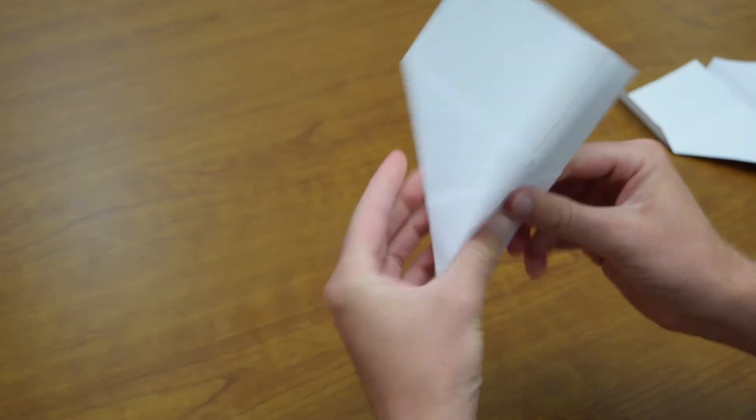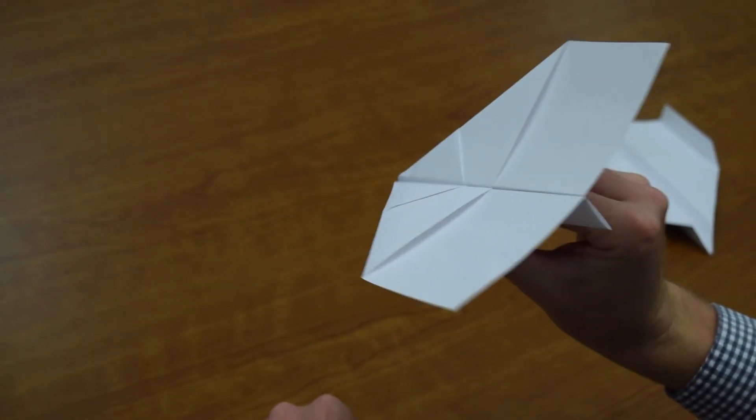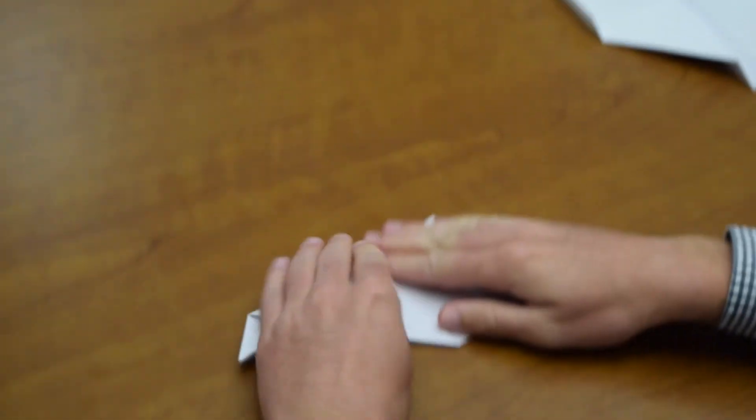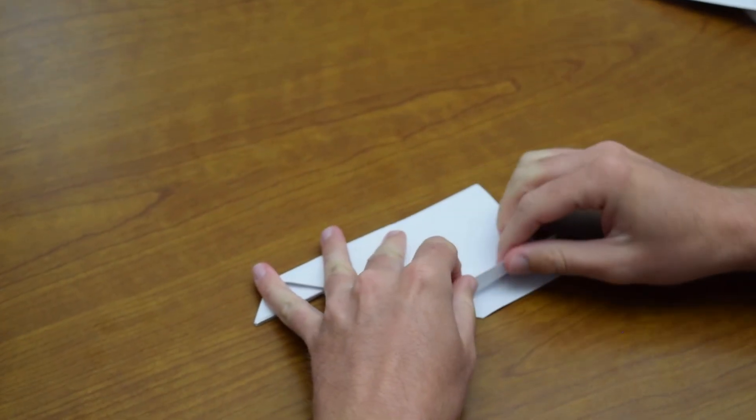You can see it already looks like an airplane. However, to add some extra stability to this airplane, we're going to fold it again like this. We're going to add little fins to the back.